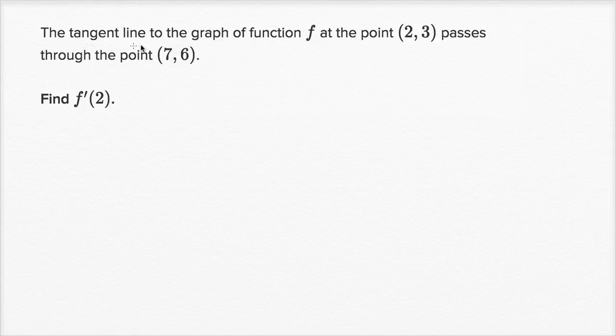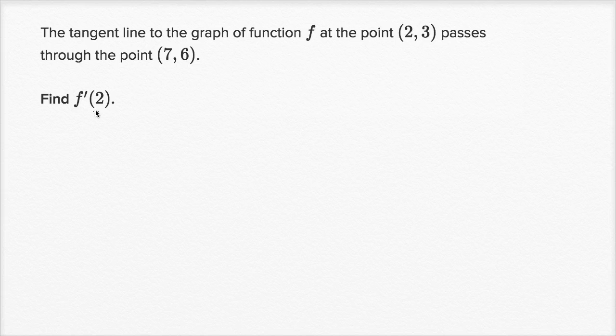We're told that the tangent line to the graph of function f at the point two comma three passes through the point seven comma six. Find f prime of two.